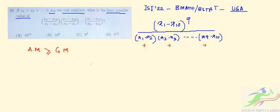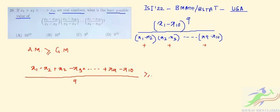So if we find the arithmetic mean of this, it will be x1 minus x2 plus x2 minus x3 up to x9 minus x10 divided by 9, which is greater than equal to x1 minus x2, x2 minus x3 up to x9 minus x10 to the power 1 by 9.